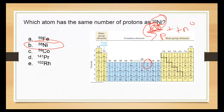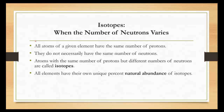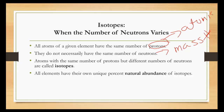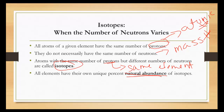All atoms of a given element have the same number of protons — we've said that several times now. They do not necessarily have the same number of neutrons, and this will affect the mass number. Atoms with the same number of protons but a different number of neutrons are called isotopes. All elements have their own unique percent natural abundance of isotopes — meaning the percentage in which each isotope is found in nature.